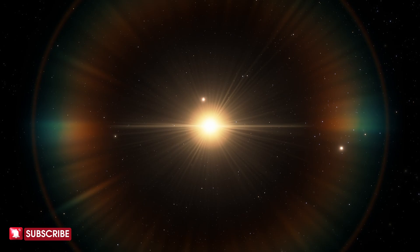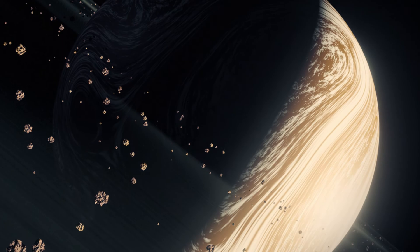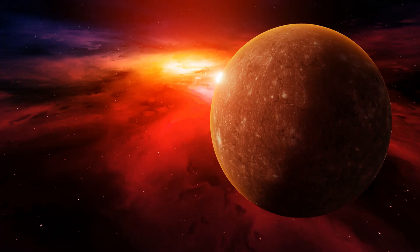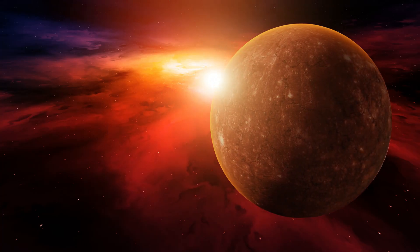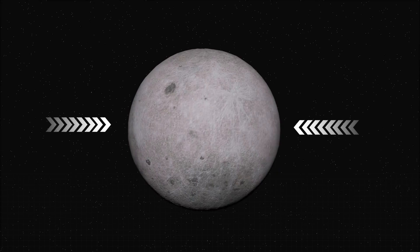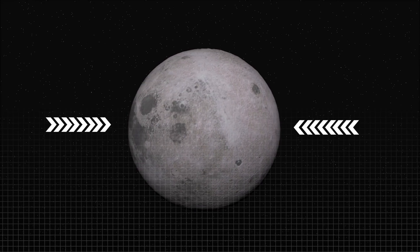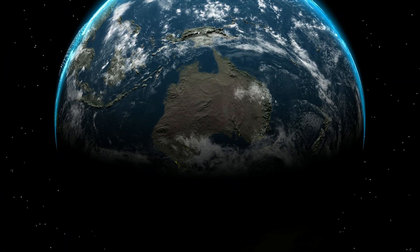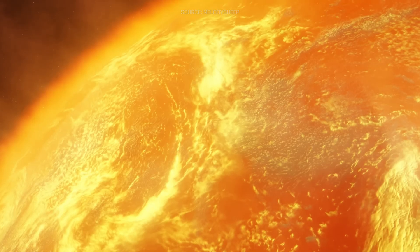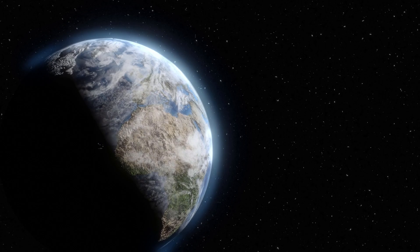But what exactly causes planets to take on this distinctive round shape? The answer lies in the relentless pull of gravity. Every object with mass exerts gravitational pull, and when a celestial body reaches a certain size, its gravity pulls everything toward its center of mass with equal force from all directions, leading to a spherical shape. This is because a sphere is the only shape that minimizes the gravitational potential energy for a given amount of substance.